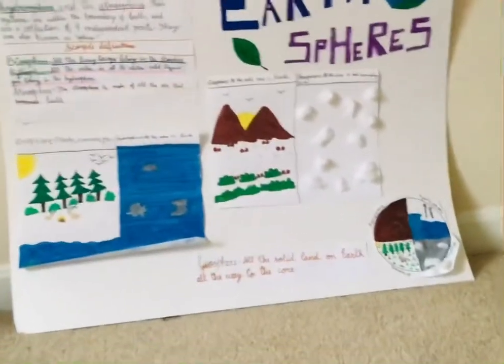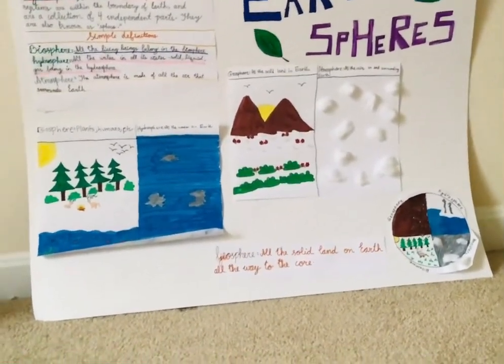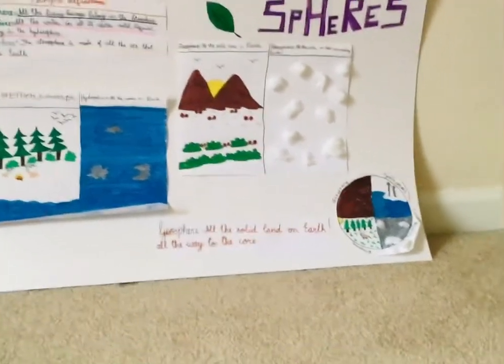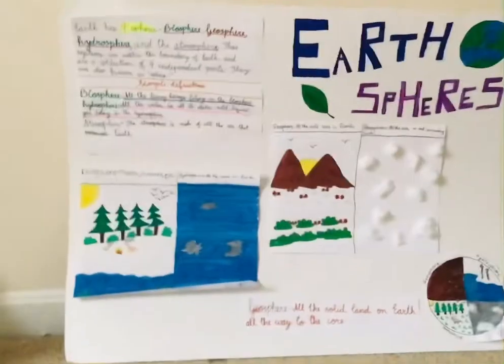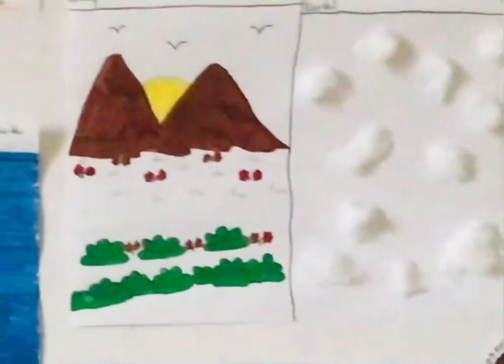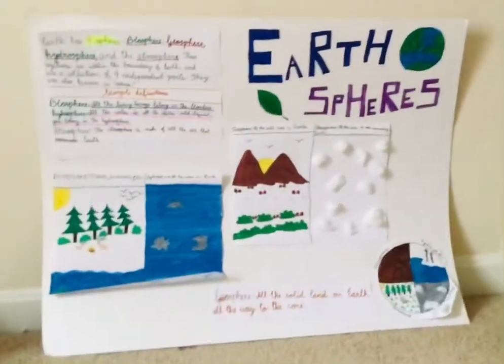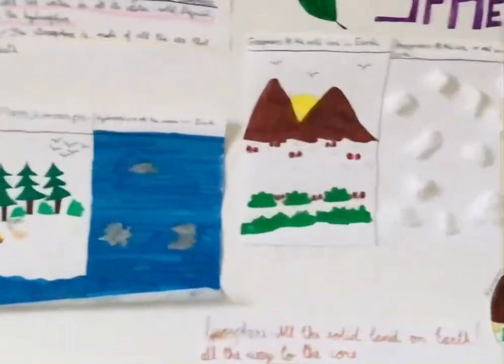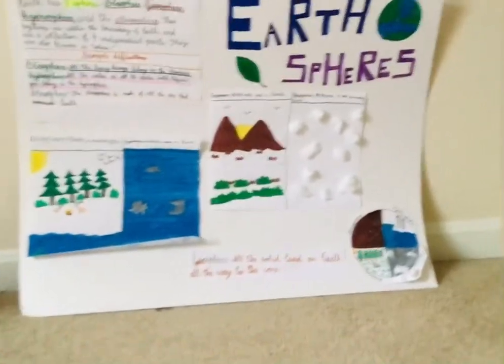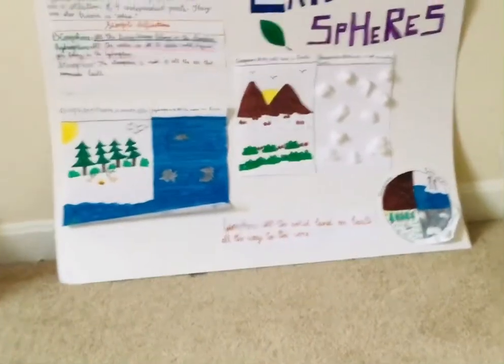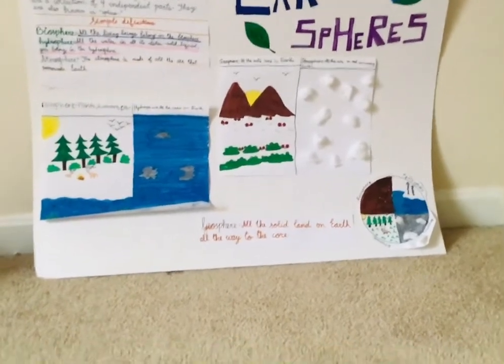Now let's move on to the atmosphere. The atmosphere is made up of all the air that surrounds Earth. In my diagram, I used cotton balls to represent the different types of gases in our atmosphere — for example, nitrogen and oxygen. I couldn't exactly represent those gases visually, so cotton balls were used to symbolize them.